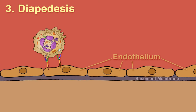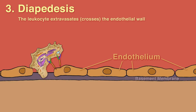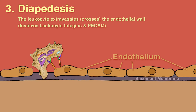Step 3: Diapedesis. In this step, the leukocyte extravasates, or crosses, the endothelial wall. This involves the leukocyte integrins, as well as further adhesive interactions involving an immunoglobulin-related molecule called PCAM, or CD31, expressed both on the leukocyte and at the intercellular junctions of endothelial cells.